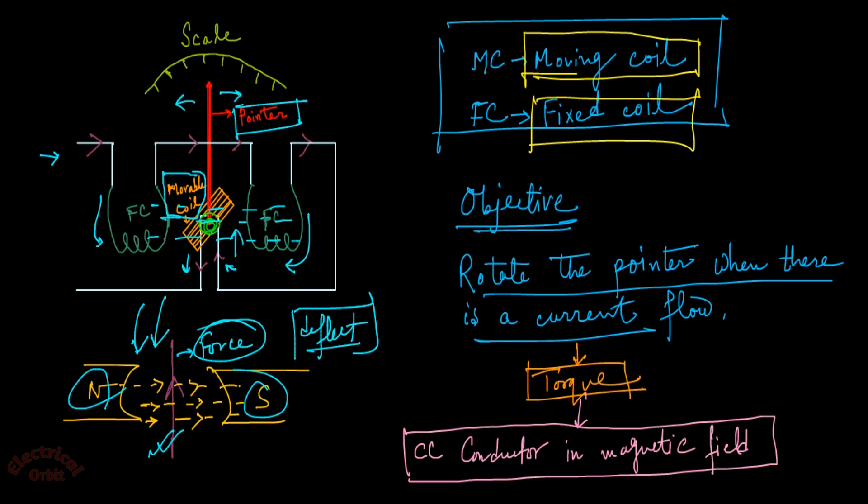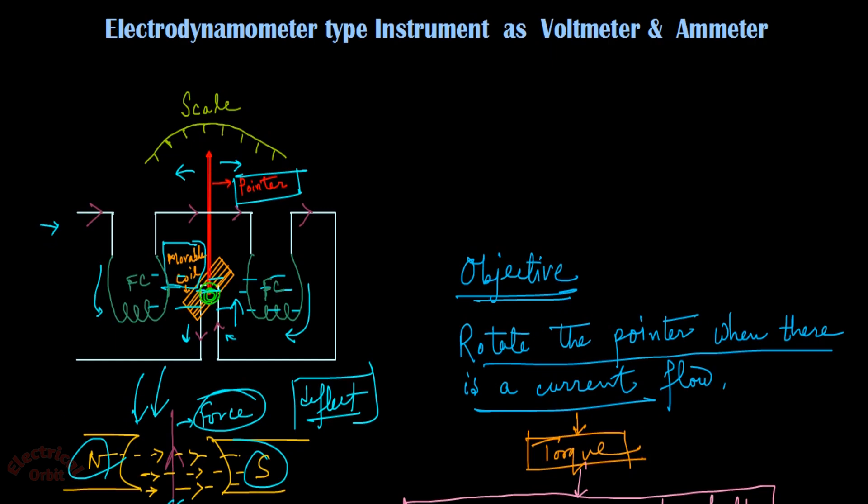So this is the working principle of how an electrodynamometer type instrument works and can be used as meters in the circuit. To recap: first, our objective is to deflect the pointer. For that we need to generate a torque by using moving coil and fixed coil. When torque is generated, the pointer deflects.